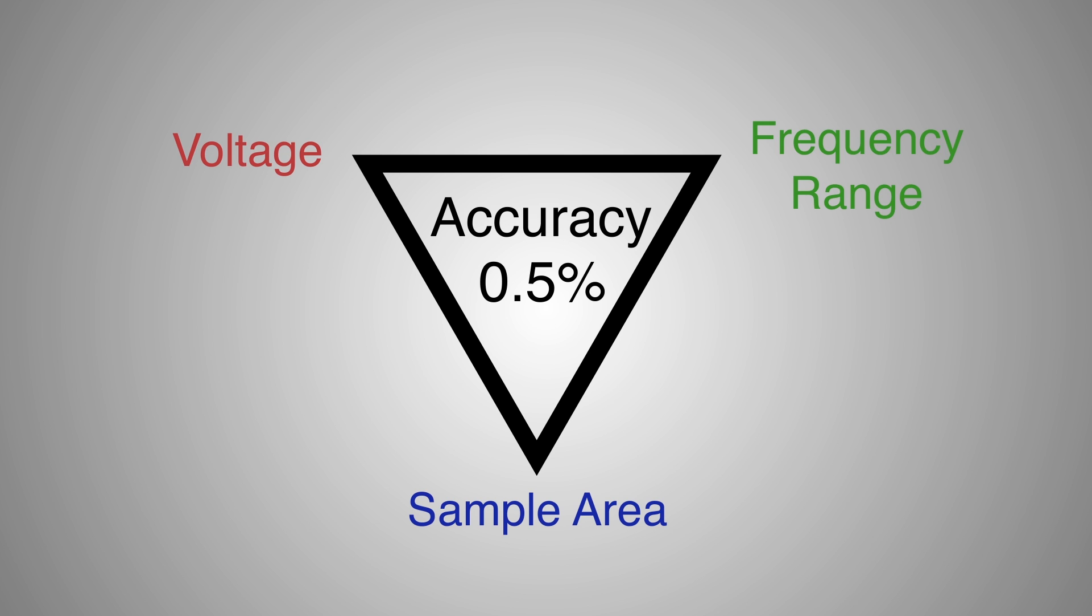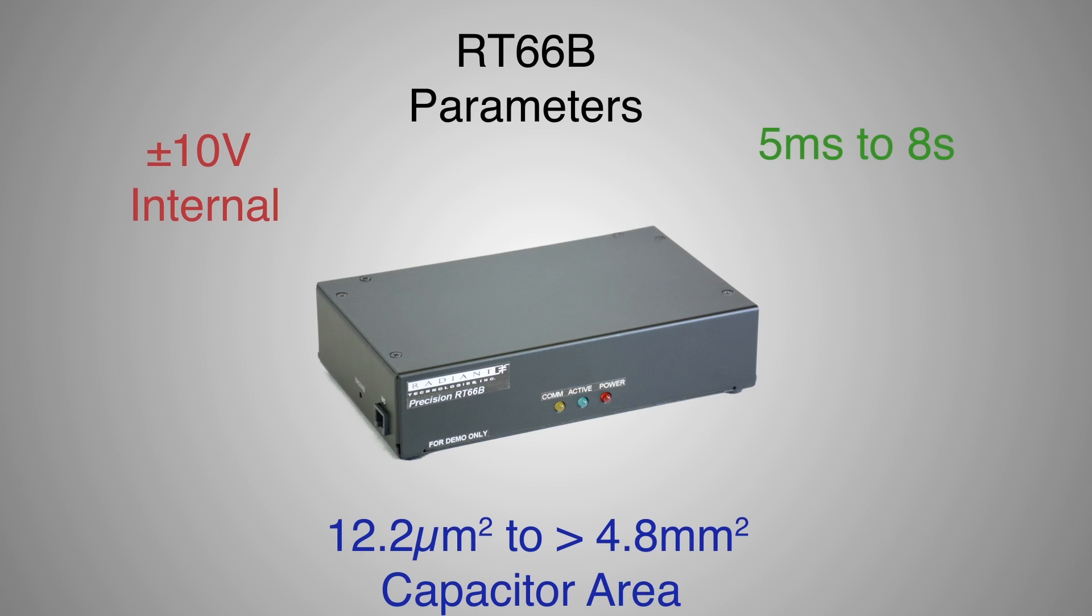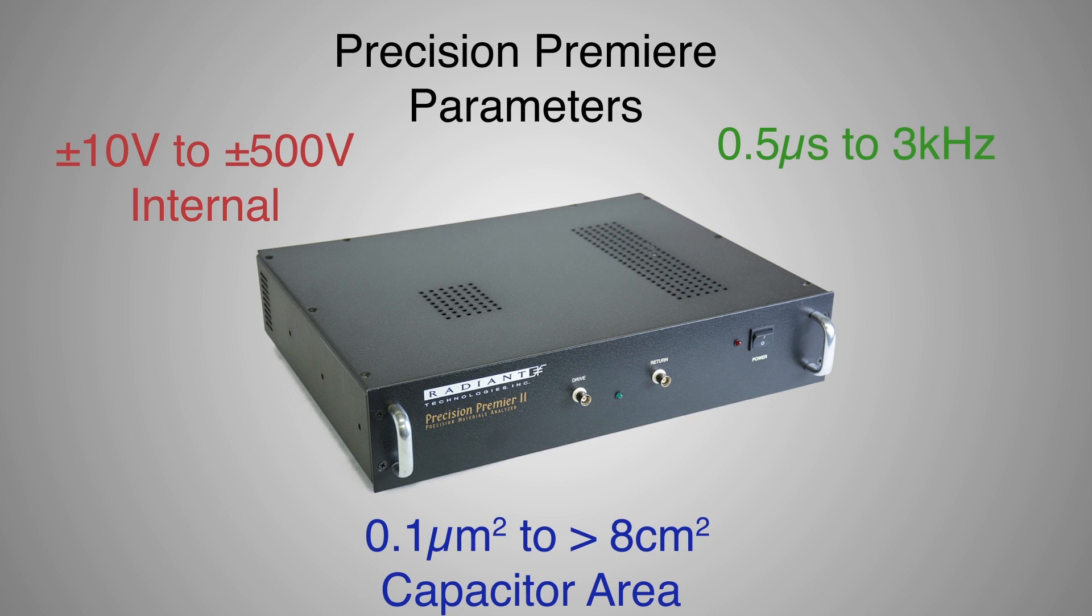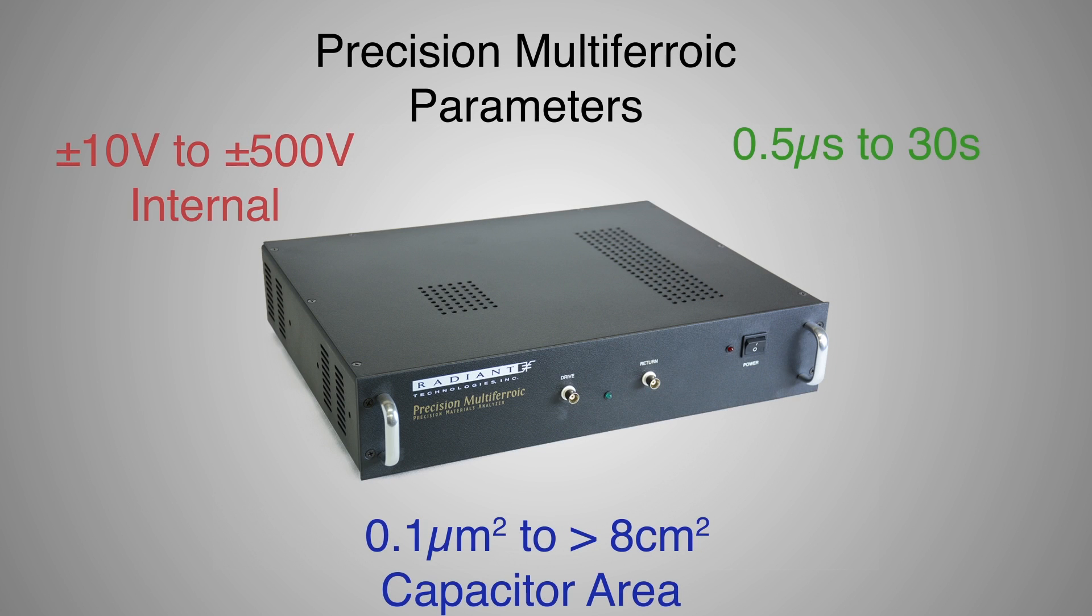Following are descriptions of the performance envelopes of the four research-level nonlinear material test systems offered by Radiant. The RT666B. The Precision LC2. The Precision Premier. And the Precision Multiferroic.